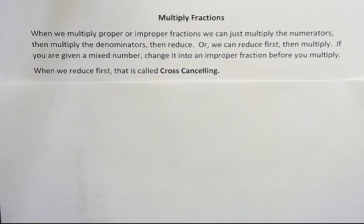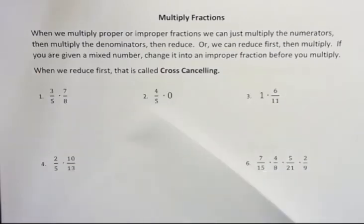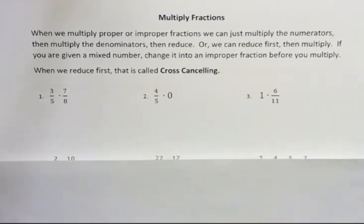When we reduce first, that's called cross-canceling. And when we can, we'll use that method because it gives us smaller numbers. Things are easier to work with.